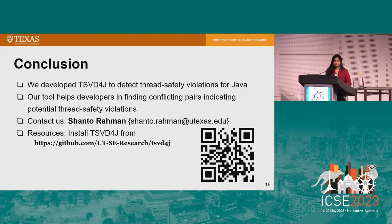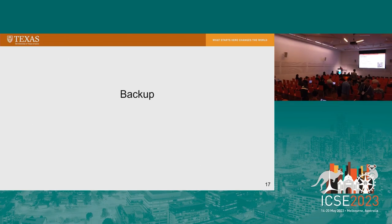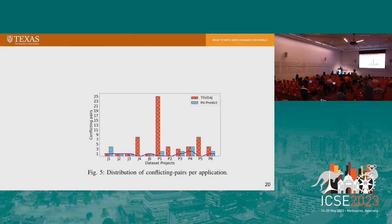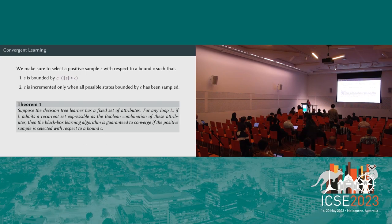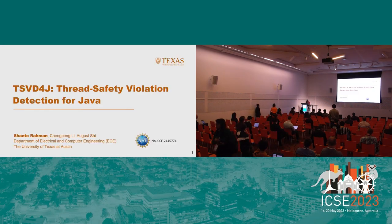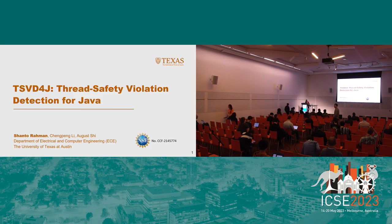Question: Did you compare your approach to different tools like JFP and others? Response: We compared our results with RV-Predict. RV-Predict found 17 conflicting pairs, while we found 55 conflicting pairs.